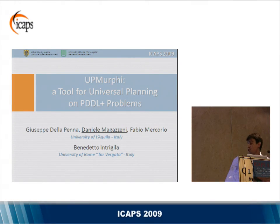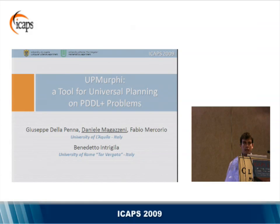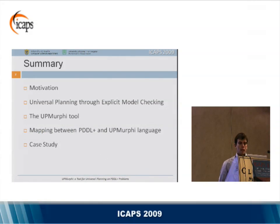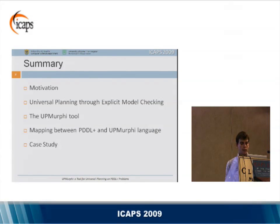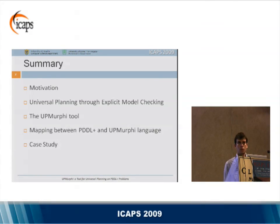I'm going to present a joint work between the University of L'Aquila and the University of Rome in Italy. This work is about a tool for universal planning on PDDL+ problems. In this talk, first I'll introduce our motivation, then describe our approach to universal planning based on explicit model checking, then present our tool APMARFI, which implements the approach and embeds a mapping between PDDL+ and APMARFI languages. Finally, I will show an application of the tool to a case study.